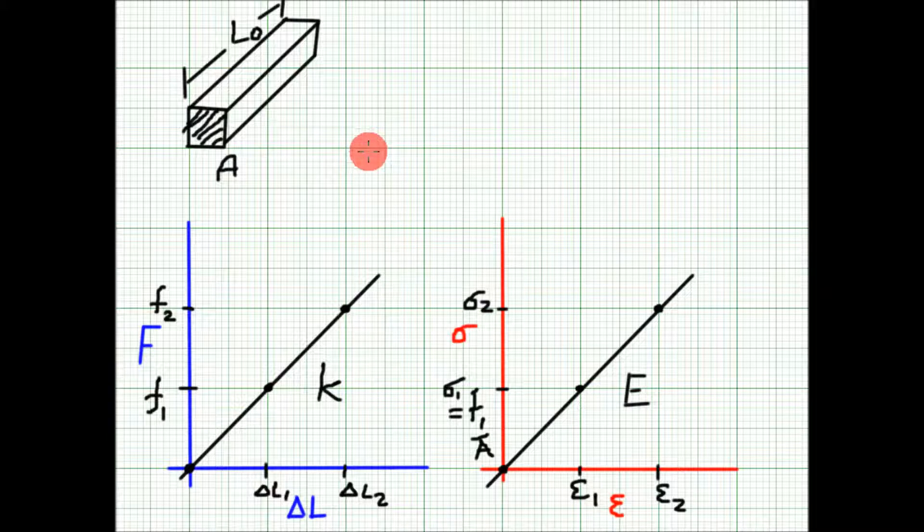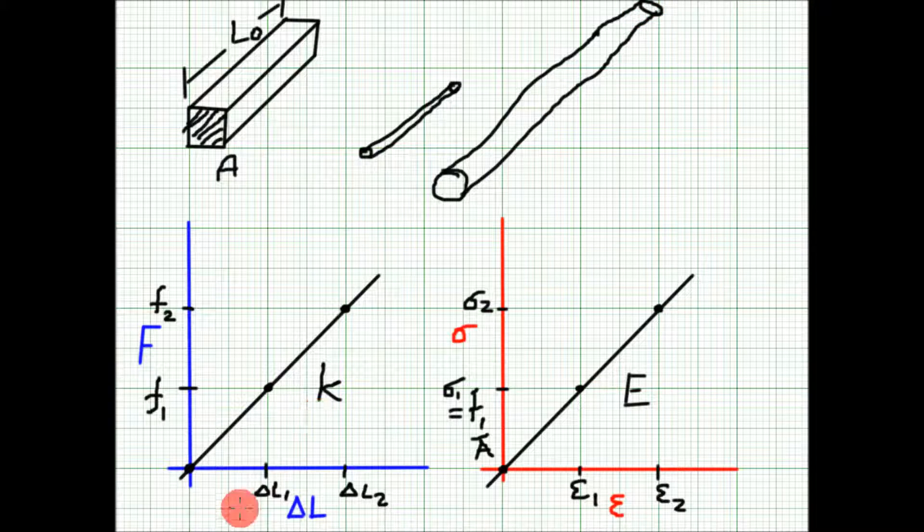Effectively, you are removing the geometry from the assessment of material properties. For example, say you have a tendon two centimeters in length and one millimeter in diameter, and another piece of tendon one centimeter in diameter and five centimeters in length. If you put these in a machine and measure force versus displacement, they'll have completely different results.